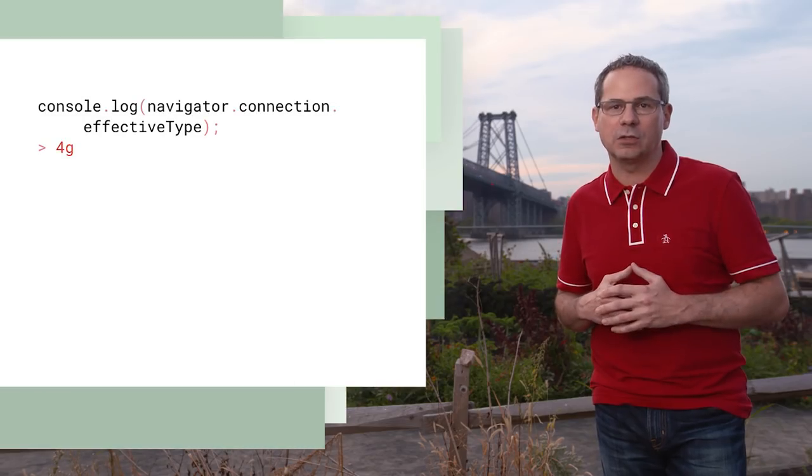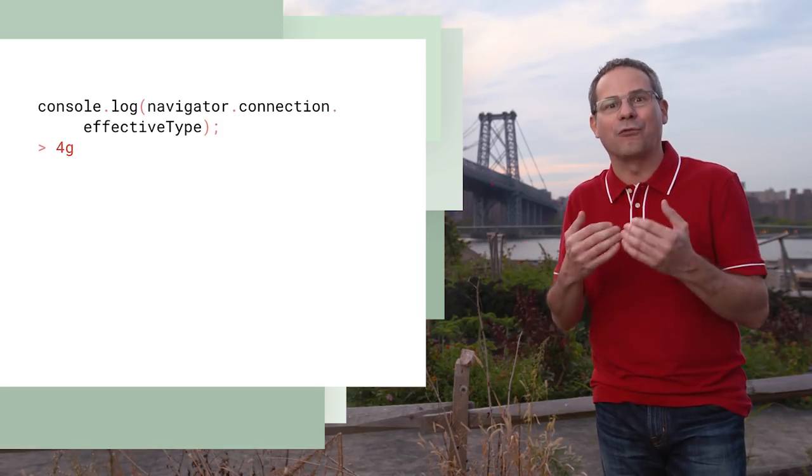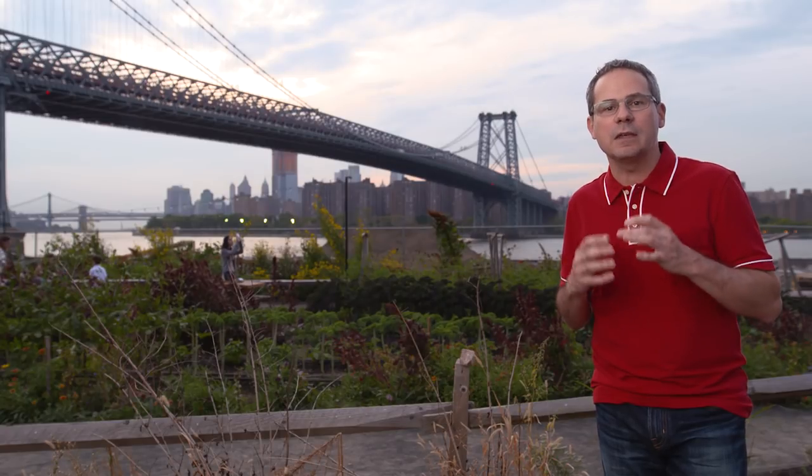In Chrome 62, the API has been expanded to provide actual network performance metrics from the client. Using these network quality signals, you can tailor content to the network. For example, on very slow connections, you could improve page load performance by serving a reduced version. To simplify your application logic, the API returns the measured network performance in terms of how it would compare to a cellular connection — for example, connected to a super-fast fiber connection, the API would report 4G.